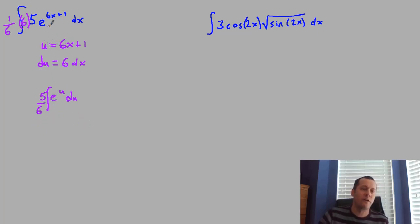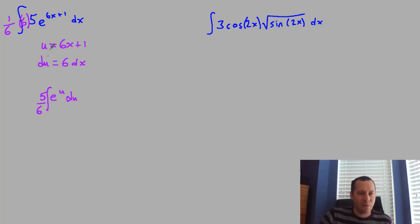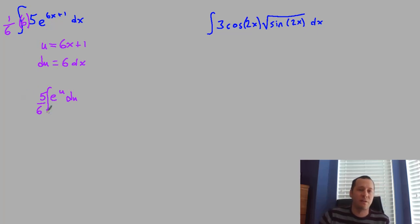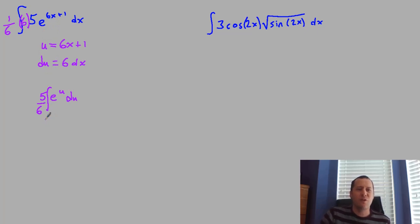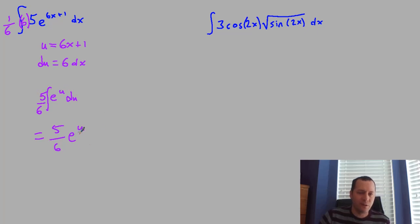This is a much easier integral. As you get better, you might be able to skip the substitution and reason directly: if differentiating would multiply by 6 due to the chain rule, then the antiderivative just divides by 6. The antiderivative of e to the u is e to the u, so we get 5/6 times e to the u plus c. Substituting back, that's 5/6 e to the 6x + 1 plus c.